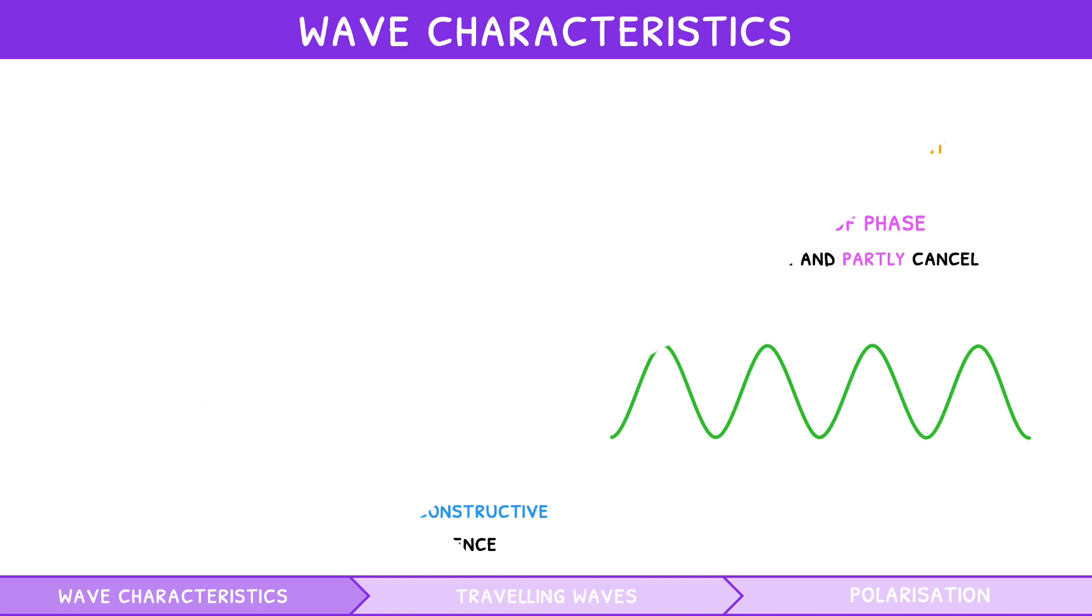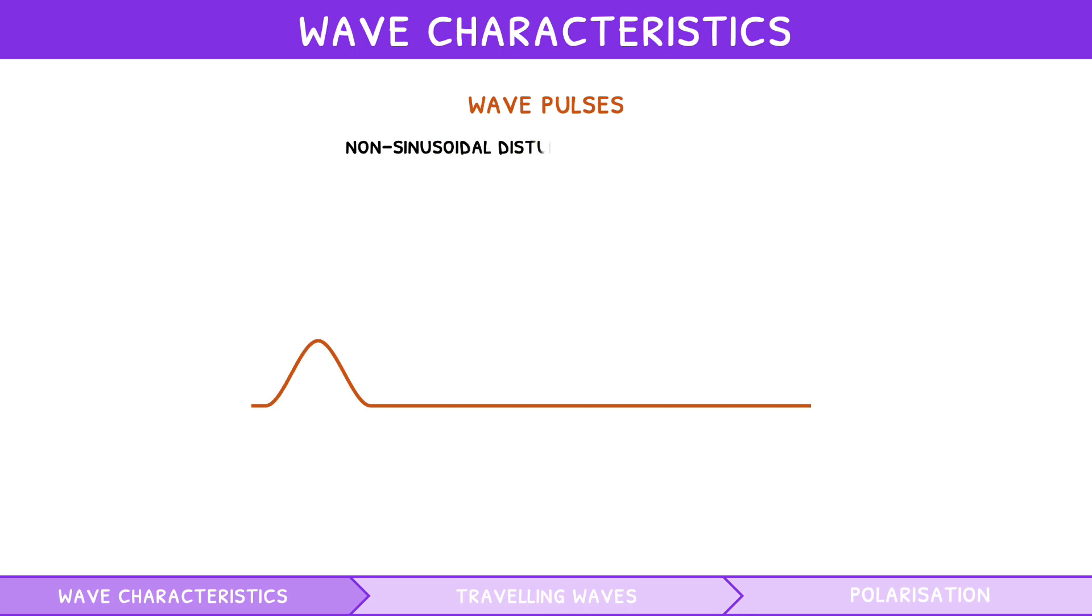A unique example of superposition is wave pulses. These are defined as non-sinusoidal disturbances of a medium that propagate as a half-wave, i.e. just the crest or trough of a wave. If two wave pulses shown below meet, they form a larger amplitude wave pulse, and then separate back into the original pulses. This, again, is destructive interference. If these two pulses shown below meet, they cancel out, and then separate back into the original pulses. This, again, is destructive interference.